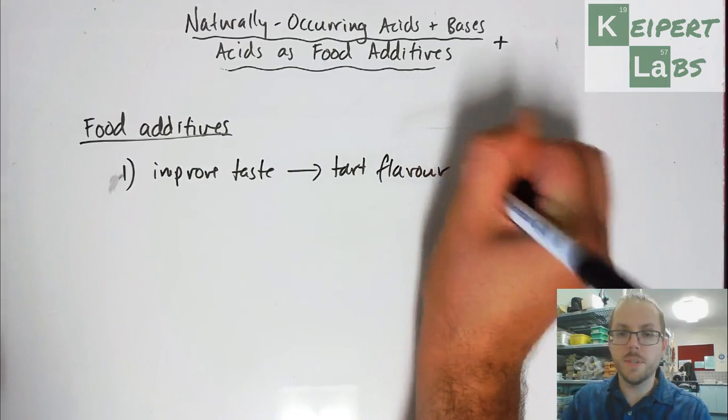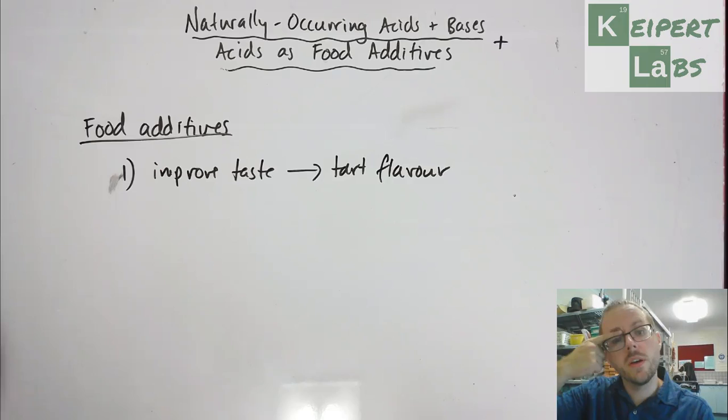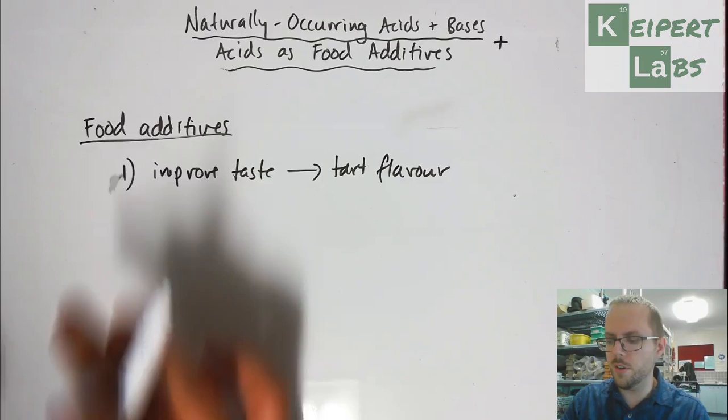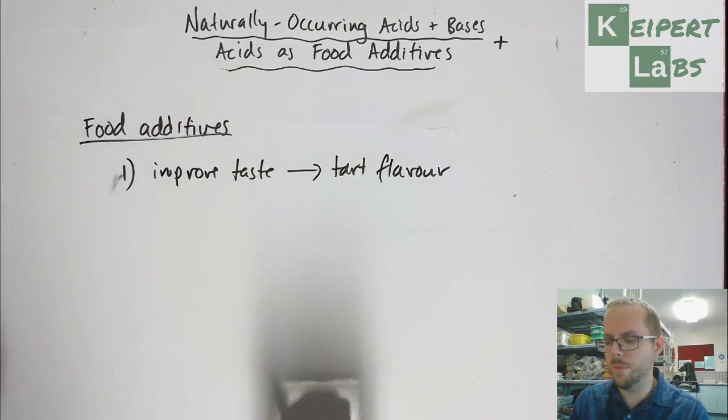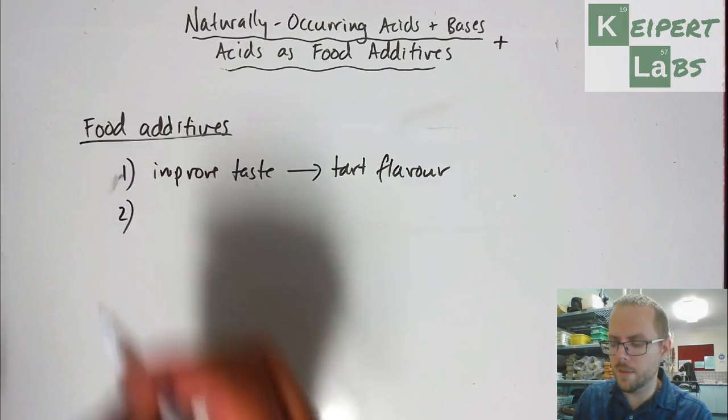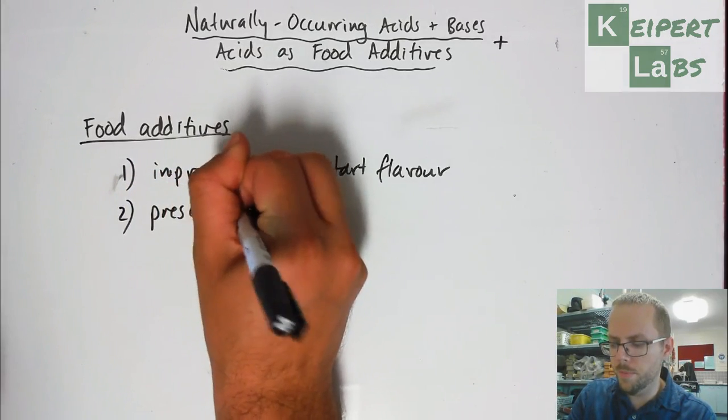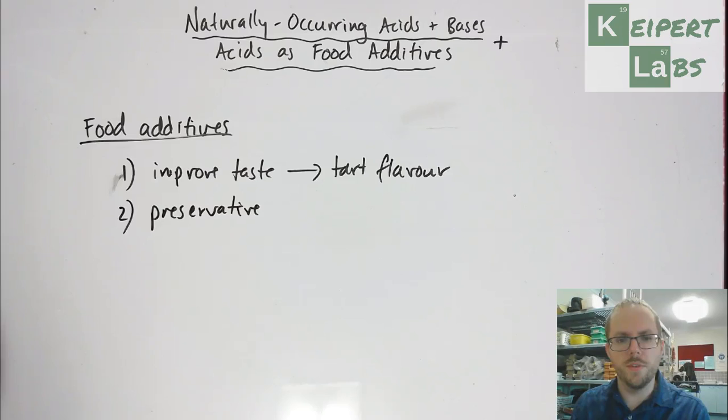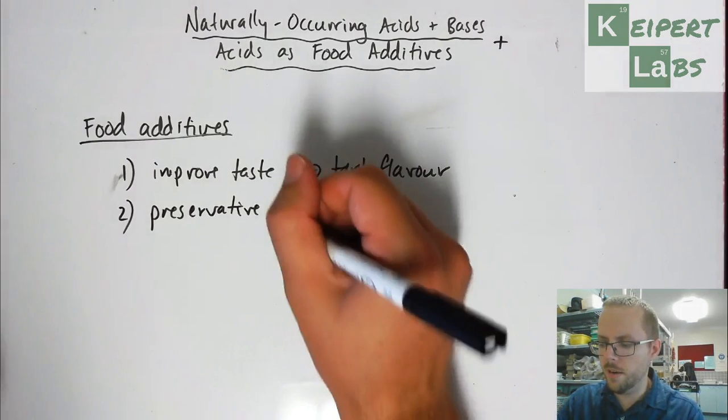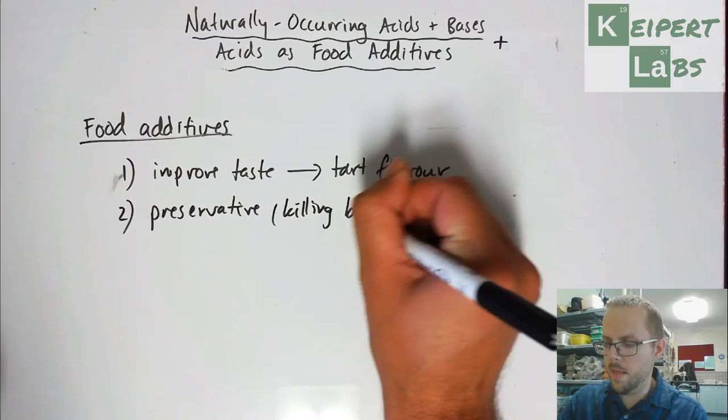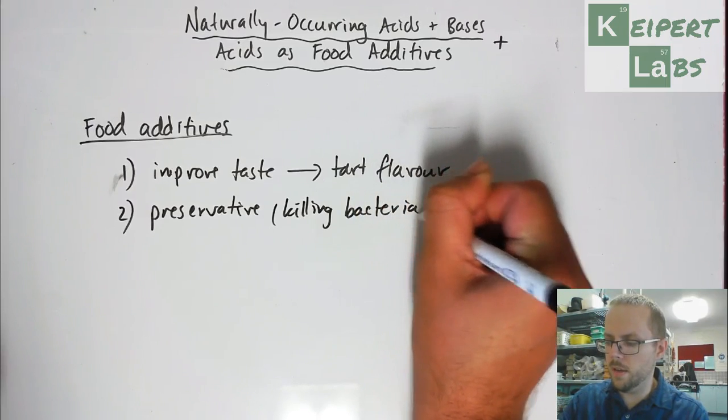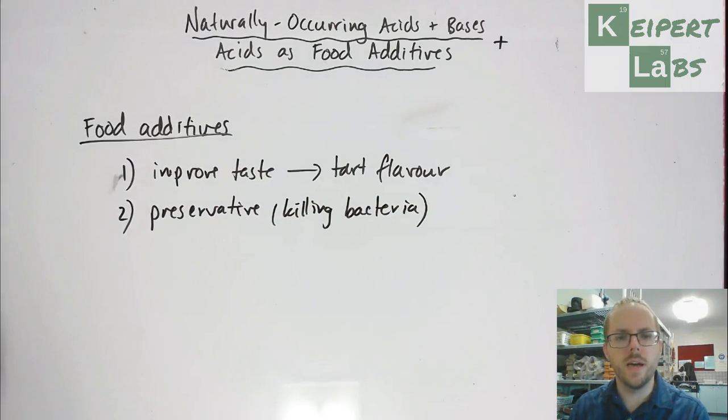So it's present in things like Coke, as well as other things like perhaps tomato sauce and other things to give it a certain kind of tartness, which makes it less bland. And then, the one that is probably more common is as a preservative. So killing bacteria, keeping the, improving the shelf life of substance.